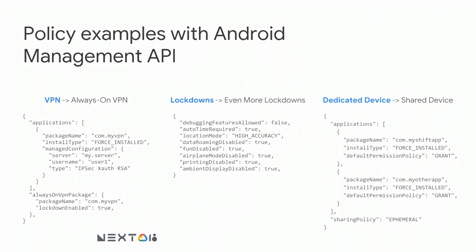For always-on VPN: first, ensure the VPN client is push-installed to the device. Encapsulated within the application policy is the managed configuration — particularly important for apps like VPN where parameters are complicated for a user to set up. You can push server endpoint, username, and authentication type. Then tell the OS to make that app the always-on VPN package. The lockdown enable parameter specifies that all internet traffic must go through that VPN.